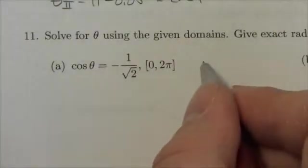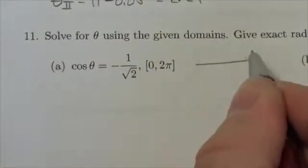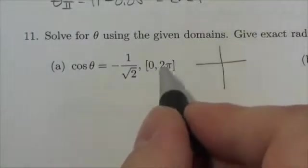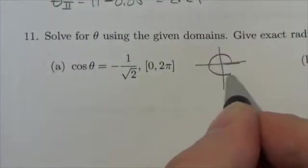Now let's just think about what that is. Okay, so this is going to be from 0 all the way around to 2 pi.